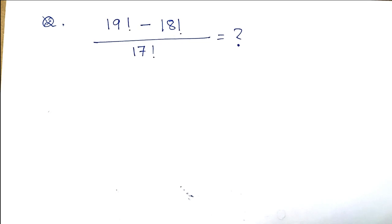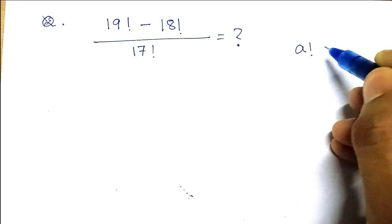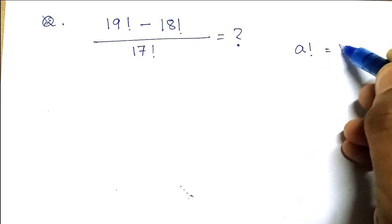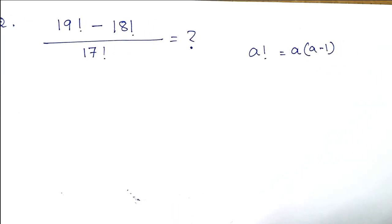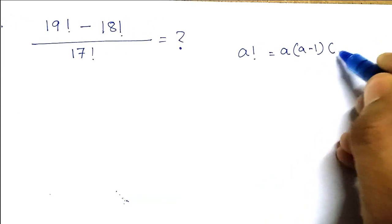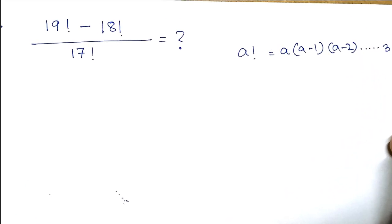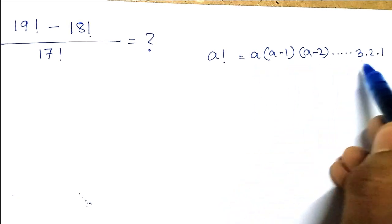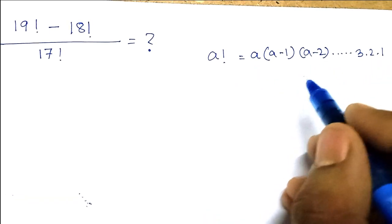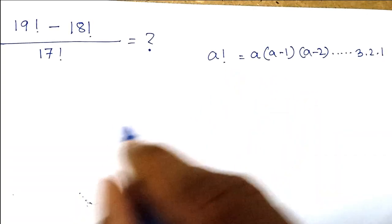As we know, factorial of a is equal to a into (a minus 1) into (a minus 2), and likewise it will go up to 1. The product of all these components is the answer for factorial a.